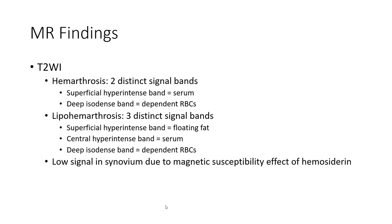MRI findings. For hemarthrosis, there are two distinct signal bands: the superficial hyperdense band represents serum, and the deep hyperdense band represents red blood cells. For lipohemarthrosis, three distinct signal bands are present: the superficial band represents floating fat, the central band represents serum, and the deep band represents red blood cells. Low signal in the synovium is due to the magnetic susceptibility effect of hemarthrosis.